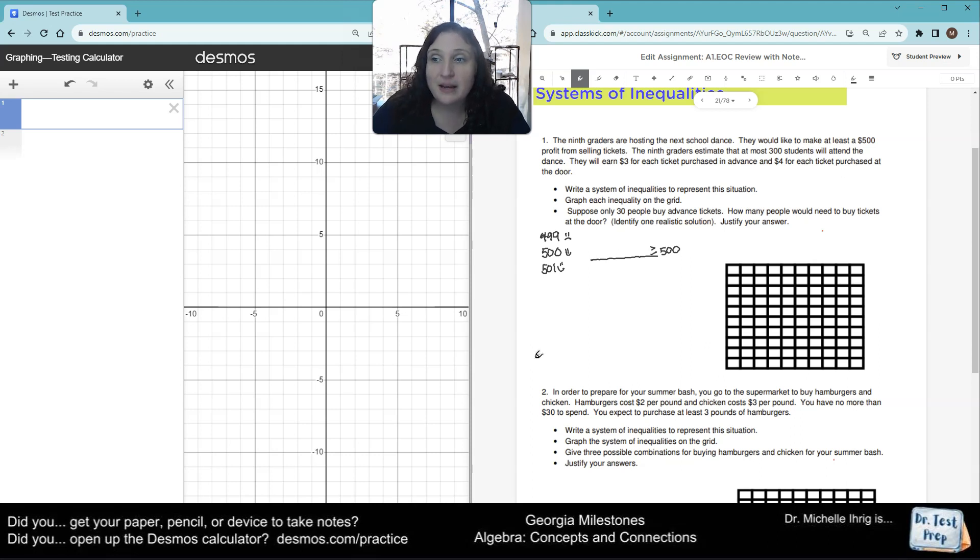The ninth graders estimate that at most 300 students will attend the dance. So now we're going to write our $300, $299, and $301. So it says at most $300. So if $299 come, is that expected? Yeah, because the highest will be $300. So that's okay.